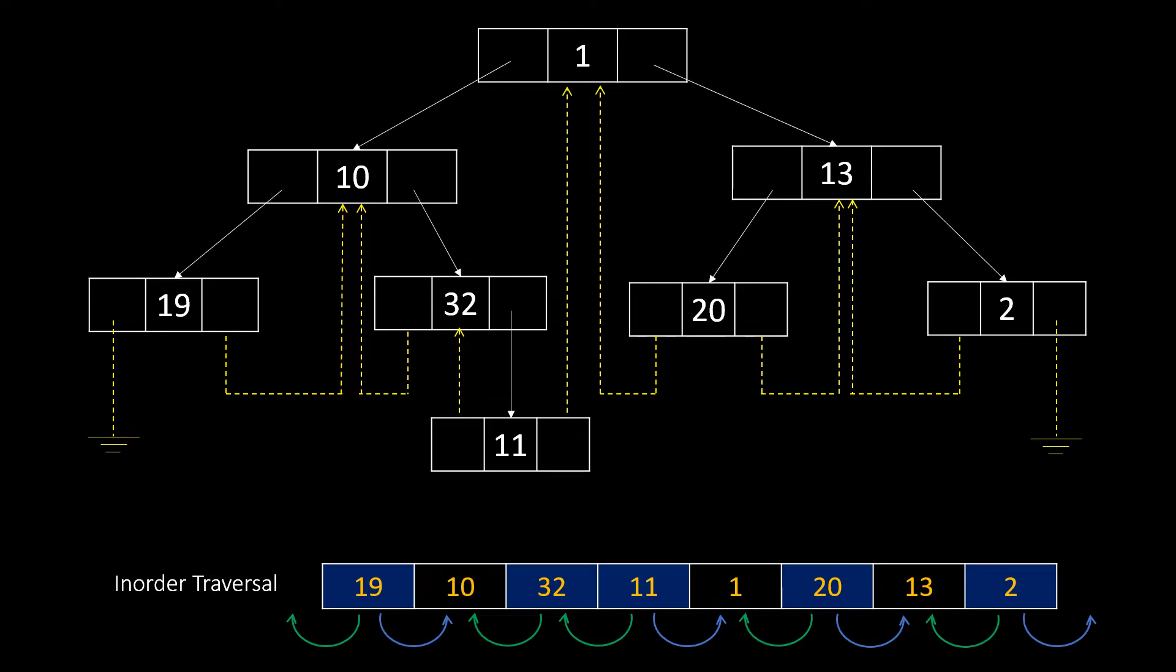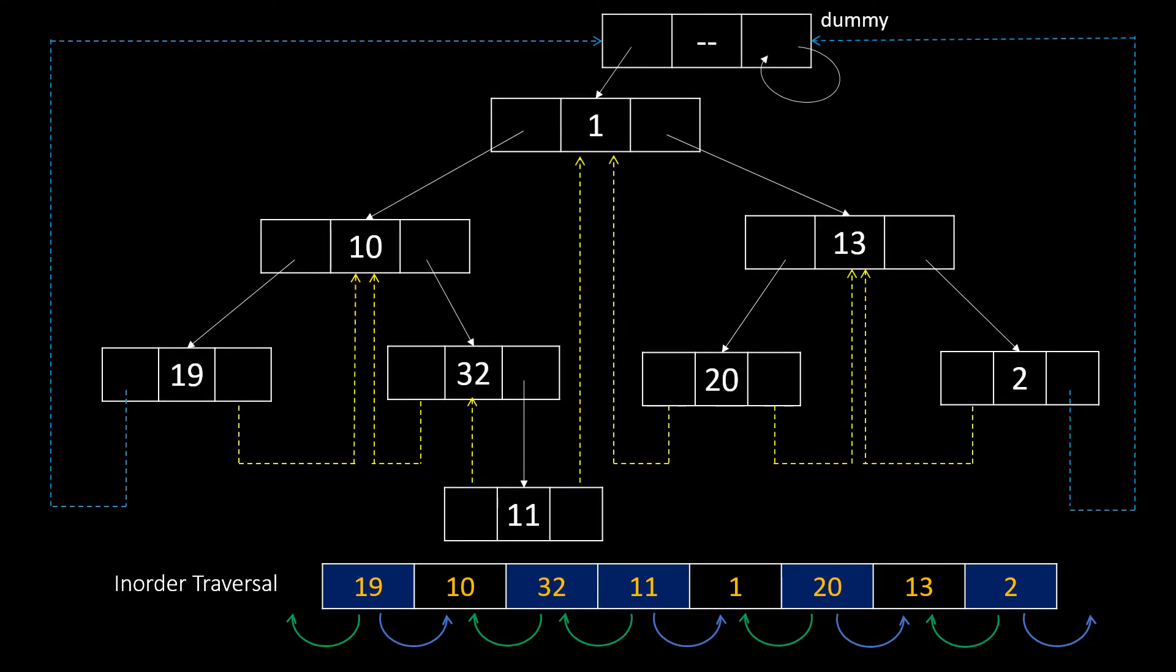For the first node that is node 19, we do not have a predecessor. So, the left node is currently pointing to null. And same with the successor for node 2. Instead of pointing it to null, we can create a dummy node and point these nodes to the dummy node. In the dummy node, the left pointer points to the root of the tree and the right pointer points to itself.